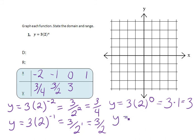Our final x coordinate, 1, when substituted in, gives us y equal to 3 times 2 raised to the first power. Again, anything raised to the first power is simply itself, so we have 3 times 2, or 6.